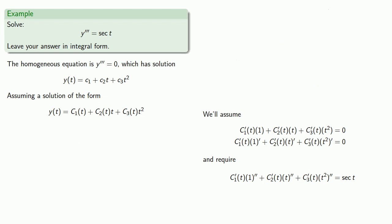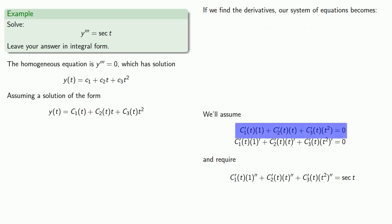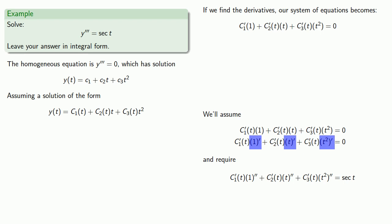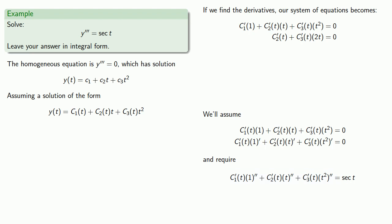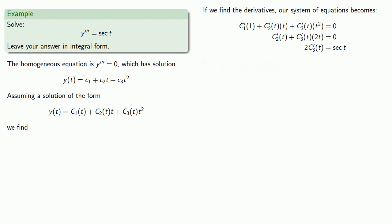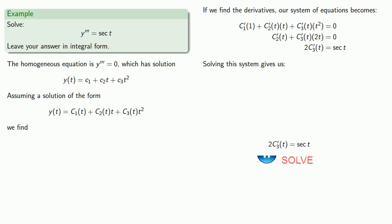We actually want to solve for c1, c2, and c3, so let's go ahead and find those derivatives. The first equation is unchanged. The second equation has the derivative of 1, the derivative of t, and the derivative of t squared, so we can find those derivatives and simplify our second equation. Our third equation requires the second derivative of 1, the second derivative of t, and the second derivative of t squared, so we can find those and simplify our third equation. That gives us a much tamer system of equations to solve. Since the third equation only involves c3 prime, let's start with that and solve for c3 prime, which tells us that c3 is the antiderivative of one-half secant t.